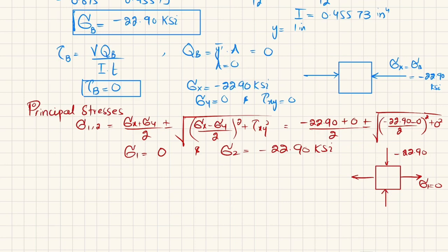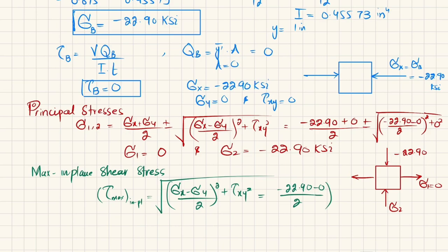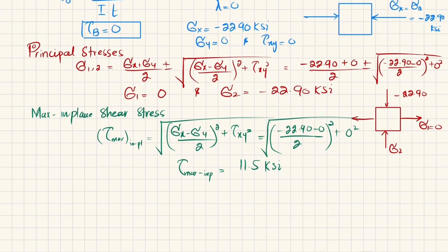The maximum in-plane shear stress is: tau_max equals the square root of [(sigma_x minus sigma_y) divided by 2]² plus tau_xy². Substituting: square root of [(minus 22.90 minus 0) divided by 2]² plus 0² gives tau_max in-plane equals 11.5 ksi.